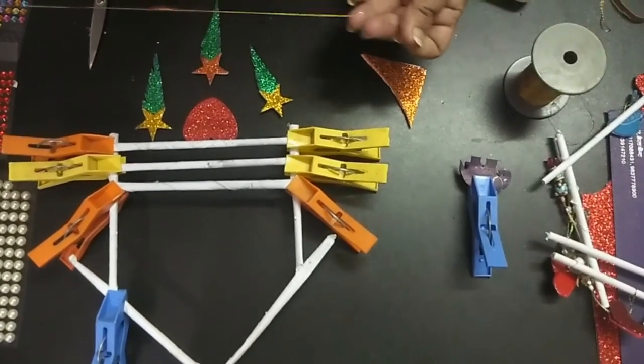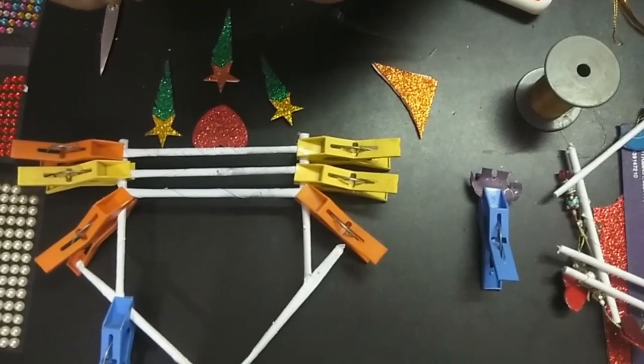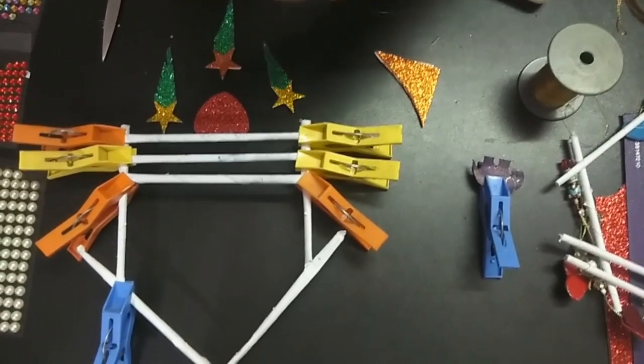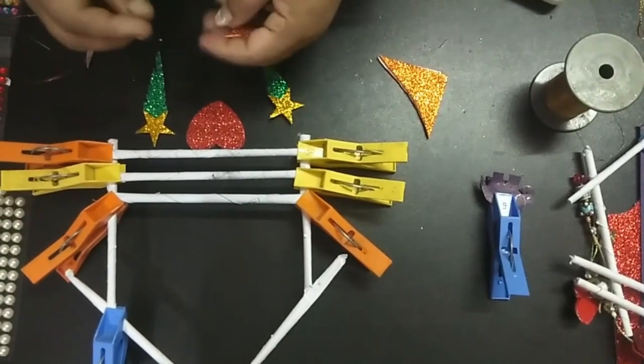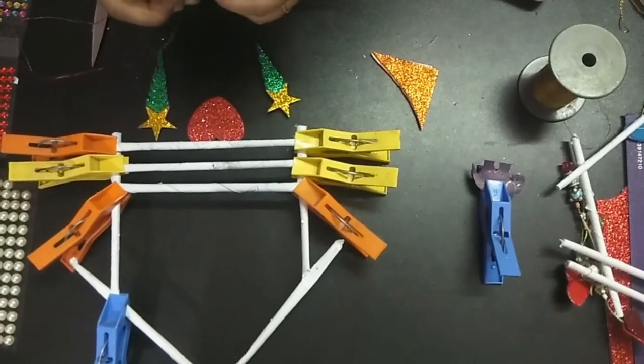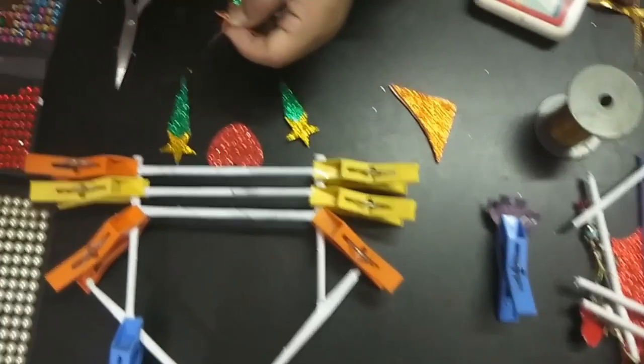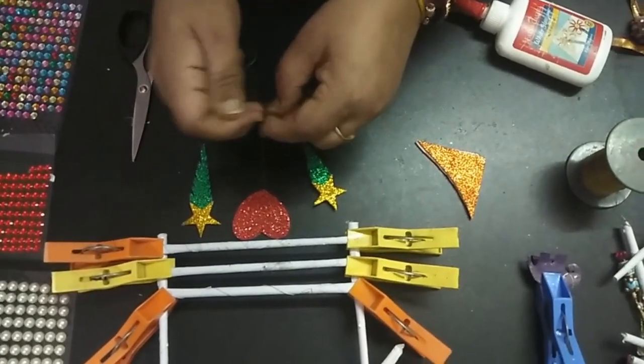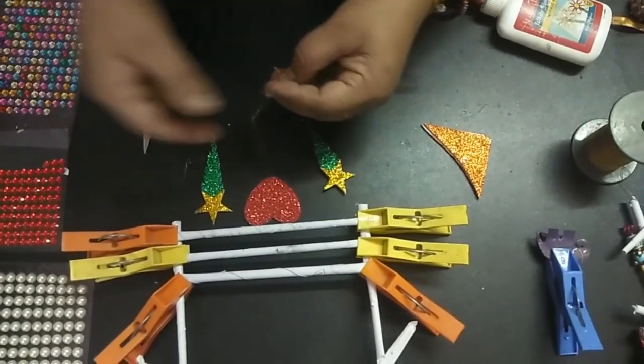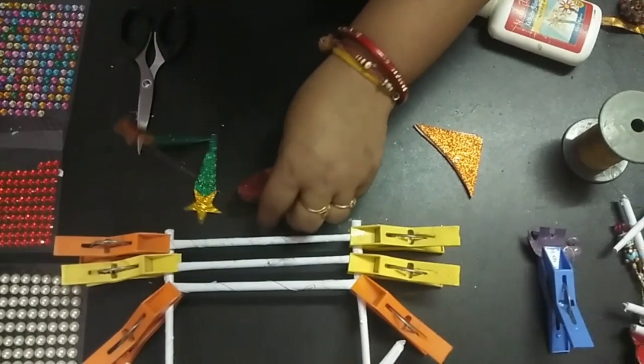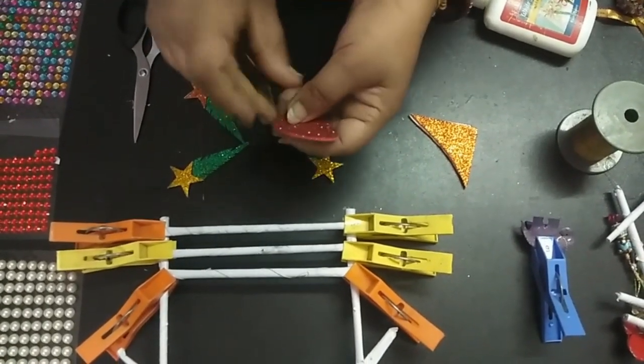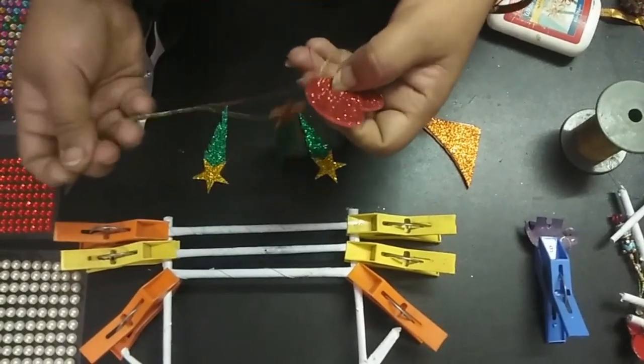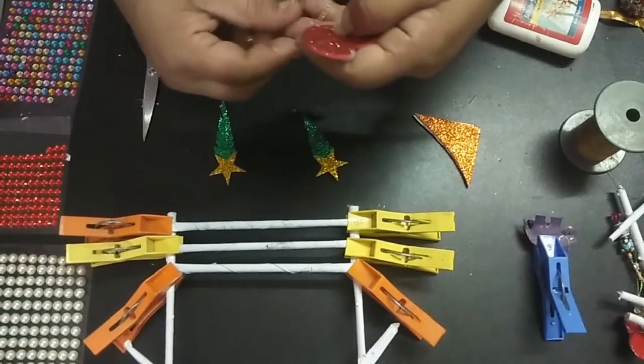So you need the thread and needle. What you have to do is, first of all, pass this through the star. Okay, and then you just have to pass it here from the heart shape. You can do the sticking method also.